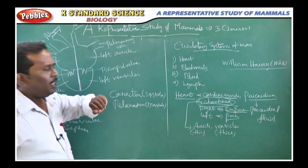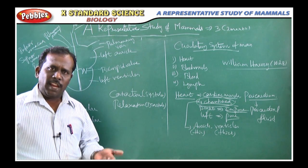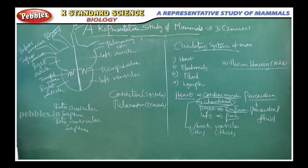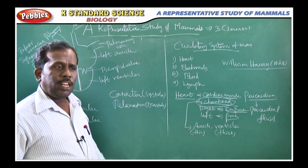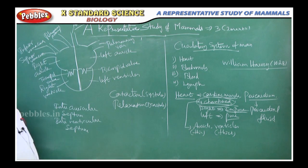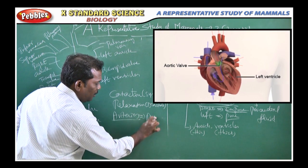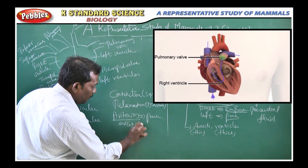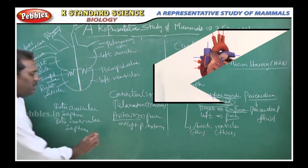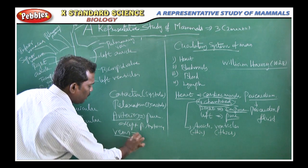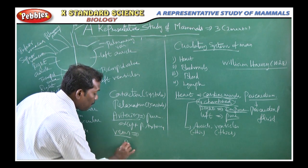The blood vessels include arteries, veins, and capillaries. Capillaries are tiny blood vessels. Arteries mainly carry pure blood, except the pulmonary artery. Veins are involved in the supply of deoxygenated blood, except the pulmonary vein.